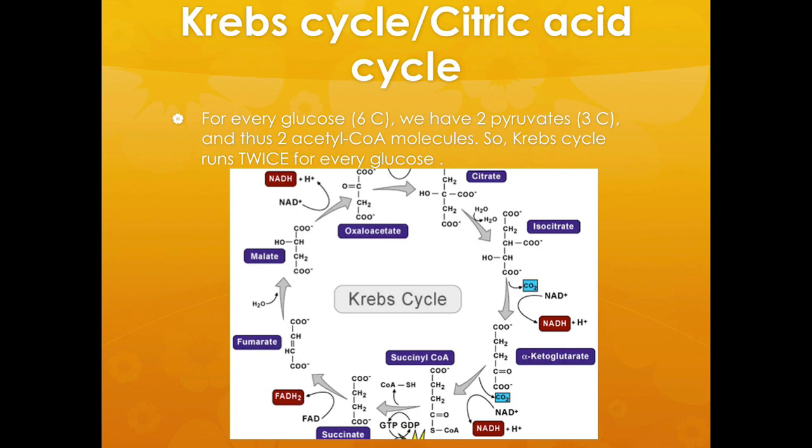In this process, three molecules of NADH, one molecule of FADH2, and one molecule of ATP are made. Carbon dioxide is also released. Those are the main things you should know for the Krebs cycle.